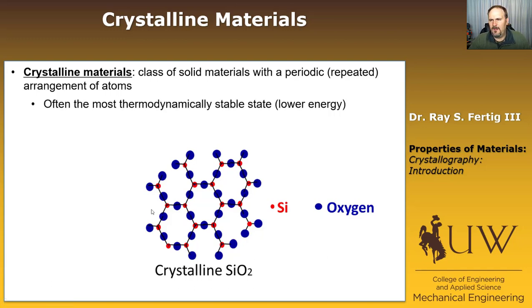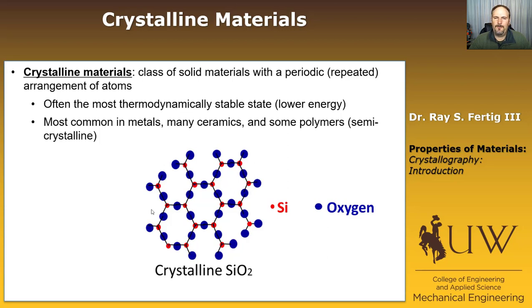Most often, these are the thermodynamically stable state of most materials. They're a lower energy state, and we'll see why in the next slide. Most common, you're going to see these in metals. So if you have a piece of steel, for example, it is crystalline. If you have a piece of copper, it is crystalline. Gold, silver, platinum, aluminum, all of those are crystalline materials. They have a very defined order of their atoms, and they repeat. And we're going to talk extensively about what that order looks like.